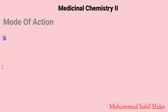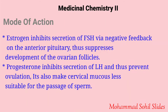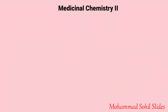What is the mode of action? Estrogen inhibits secretion of FSH via negative feedback on the anterior pituitary, thus suppressing development of the ovarian follicle. Progesterone inhibits secretion of LH and thus prevents ovulation; it also makes cervical mucus less suitable for the passage of sperm. Estrogen and progesterone act in concert to alter the endometrium in such a way as to discourage implantation.